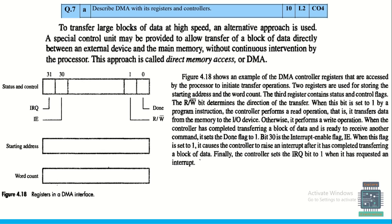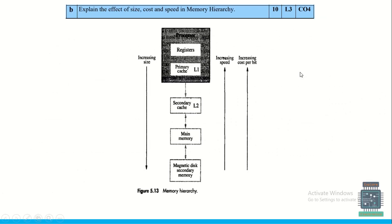For the memory hierarchy with respect to size, cost, and speed: the hierarchy from bottom to top is magnetic disk/secondary memory, main memory, secondary cache, primary cache, and registers. As we move upward toward registers, speed increases and cost per bit increases. Size increases in the reverse direction — registers have the least size while magnetic disk has the highest.